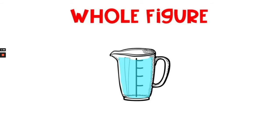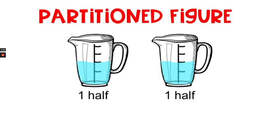Here's another whole figure. This is a cup filled with water. The whole thing is one whole. If we separated the water into two cups equally, each cup would have one half.